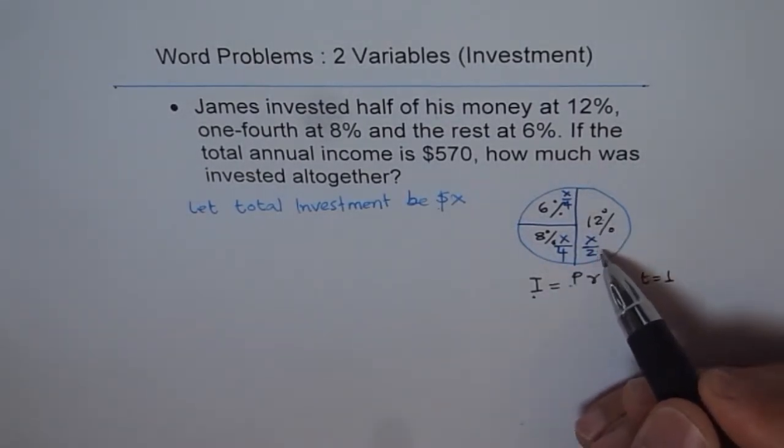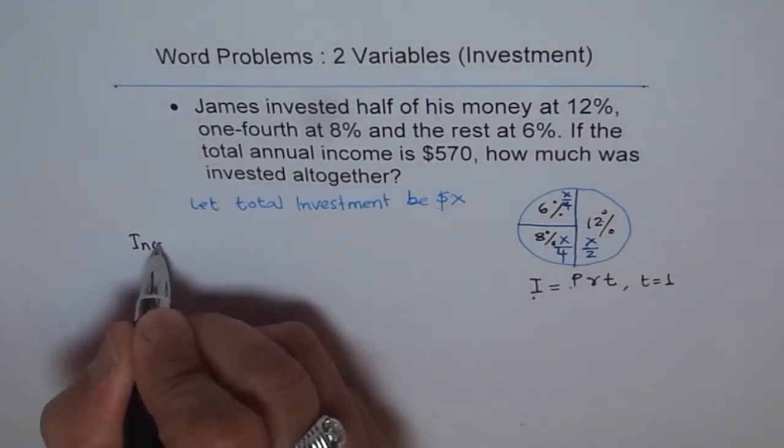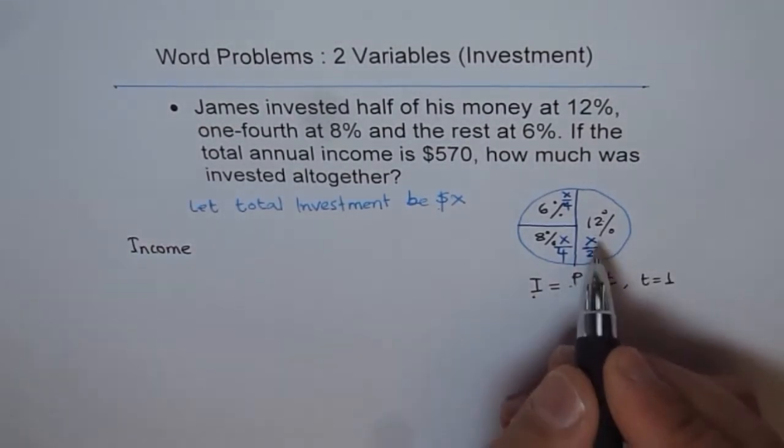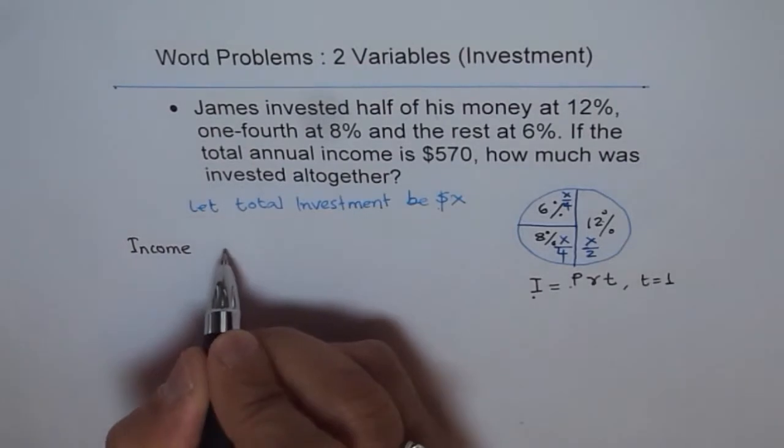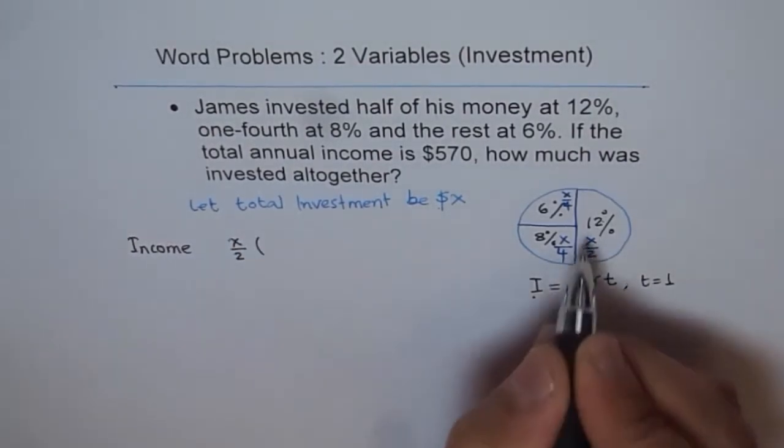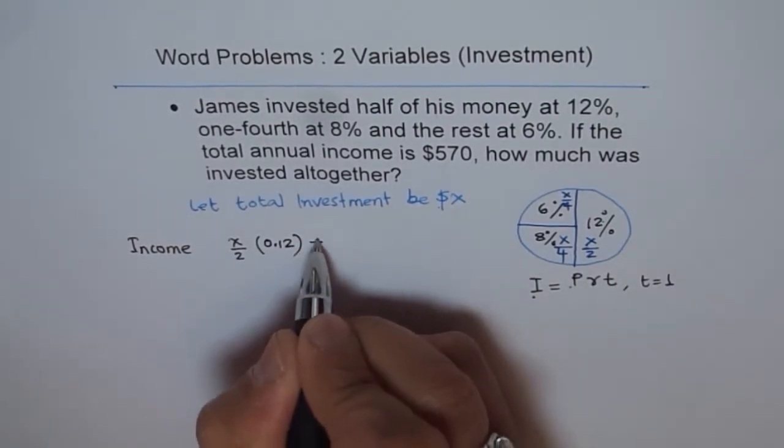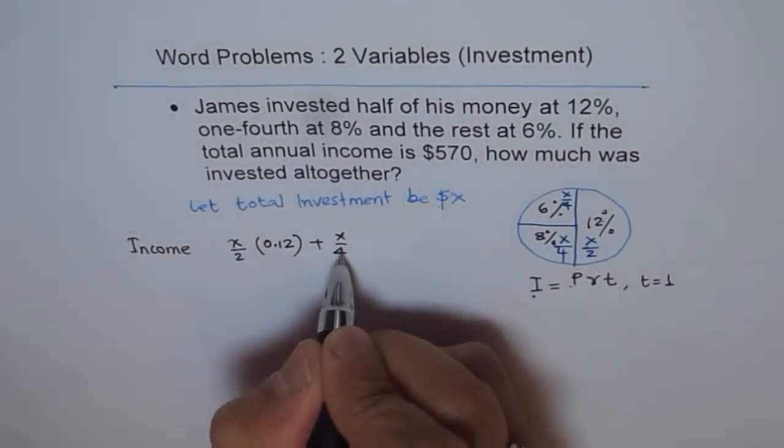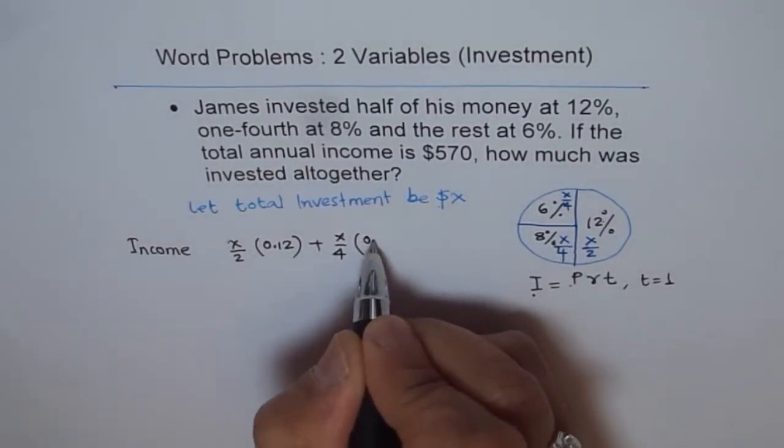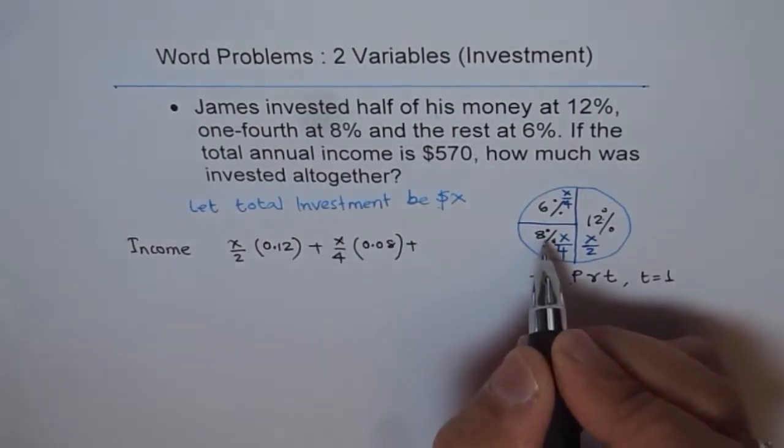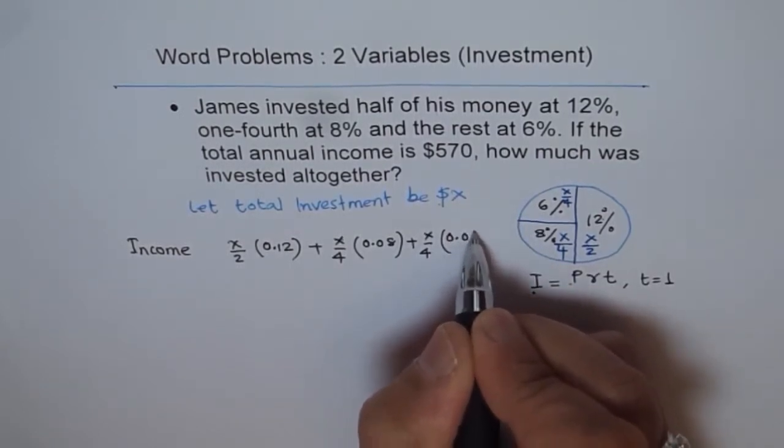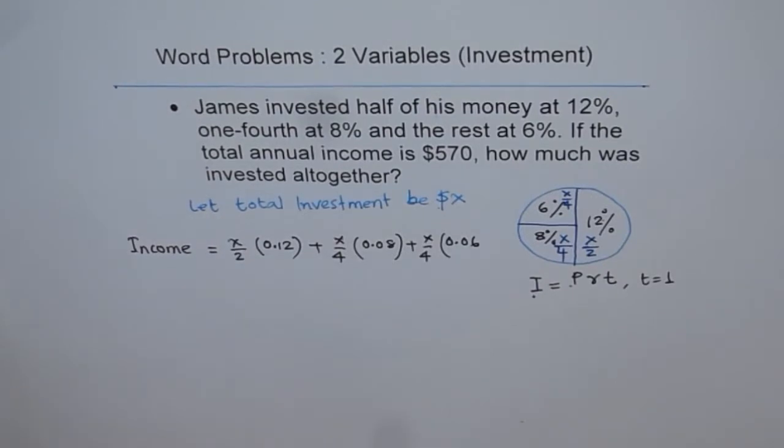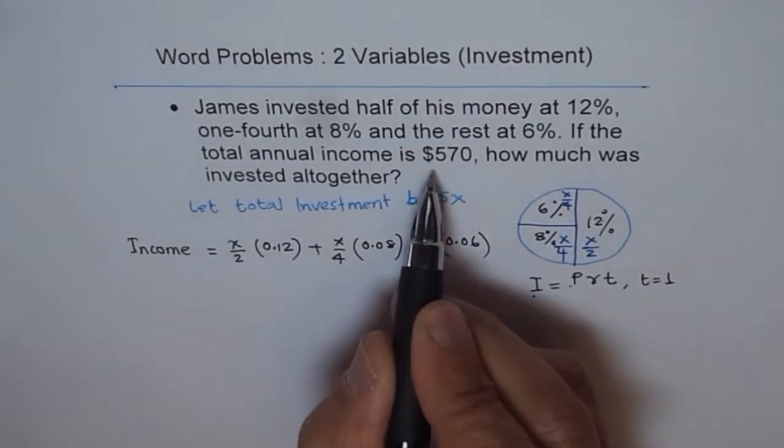And the remaining, which is also quarter of X, is invested at 6%. So now if you multiply 12% by X over 2, we get the income. Let's write down income. The total income will be X over 2 times 12%, which is 0.12, plus X over 4 times 8%, which is 0.08, plus quarter of X, which is X over 4, times 6%, which is 0.06.